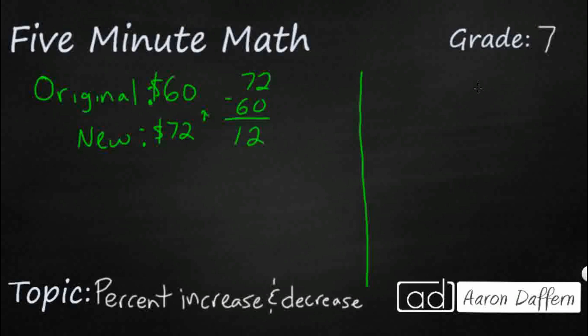So it actually went up $12. So we're going to have our change over our original. So that's going to end up being 12 over 60. And we can reduce that by dividing by 12 because we know our 12s. And that's going to make one fifth, which is 20%. So that's actually a 20% increase to go from $60 up to 72.